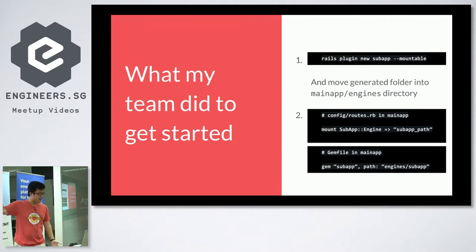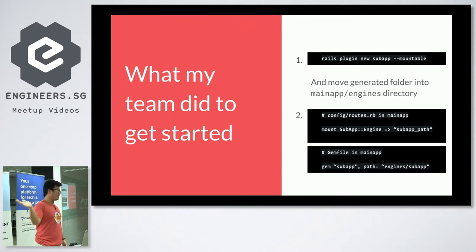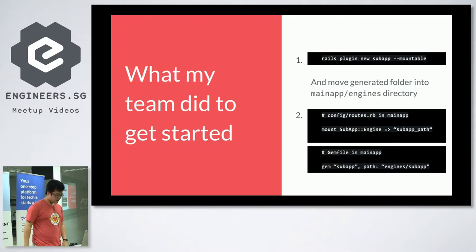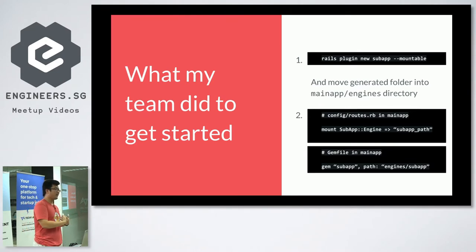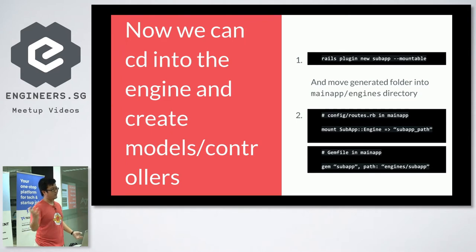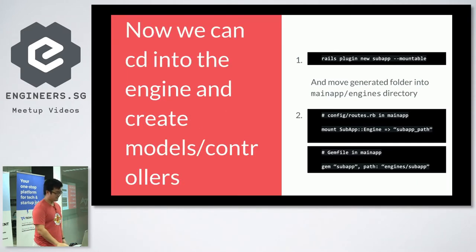We ran the `plugin new` command, which is a Rails generator — it generates a whole bunch of files. We put that into our main app's `engines` directory, which we created. Then we mounted this engine. In your routes file, you mount the engine; what this does is make any routes inside the engine available to your main app at a URL subpath. And in your main app's gem file — remember, the Rails engine is a gem — you include it using Bundler's syntax that allows you to specify the path to a local directory containing the gem. With that, you can start creating models, controllers, views and all that stuff, and it's supposed to work as if it was just another app mounted at that URL.